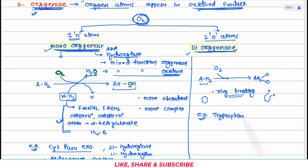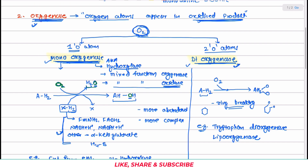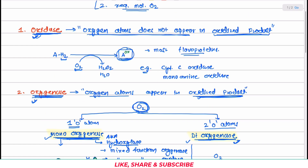The example of dioxygenase is tryptophan dioxygenase.